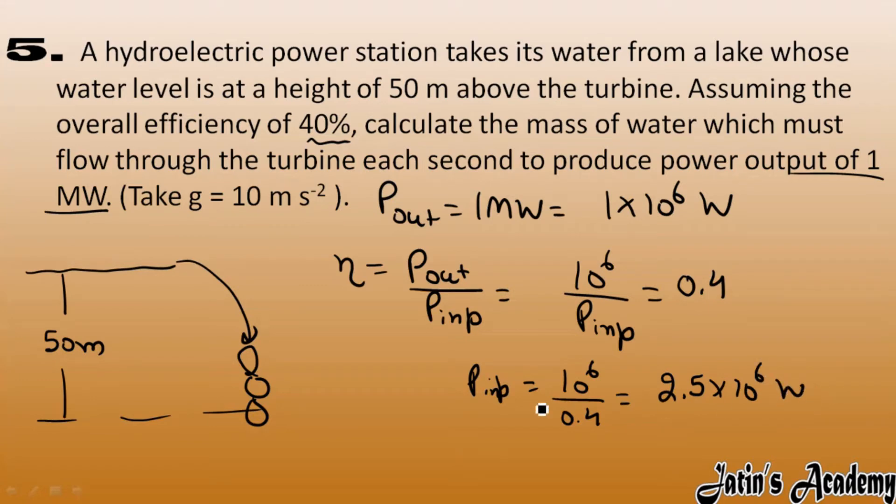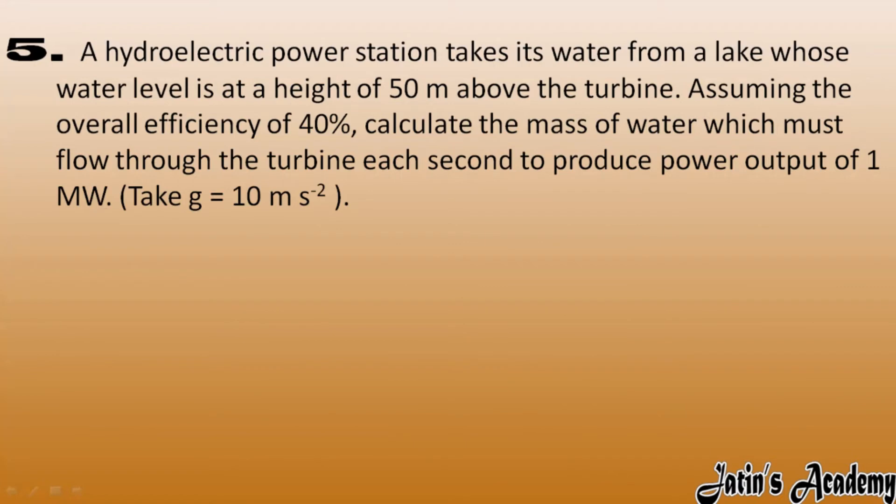But this is the power input which is given by the water. We have to calculate the energy in order to calculate the mass. So energy we have power input. Power input we have calculated that is 2.5 into 10 raised to power 6 watt into time they are talking about each second it means time is given as 1 second. So here energy we got it as 2.5 into 10 raised to power 6 joule.